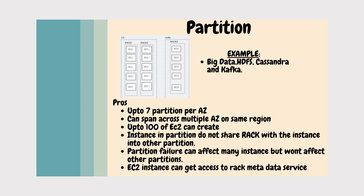Each partition is completely isolated — rack one and rack two do not share hardware. If there is a hardware failure on rack one, all EC2 instances on rack one go down, but it won't affect rack two or rack three. A partition failure can affect many instances within that partition but won't affect other partitions. EC2 instances can also access rack metadata, so each instance knows exactly which rack it belongs to.